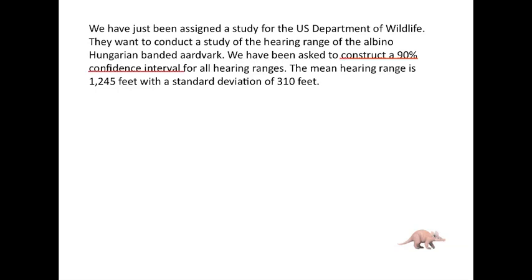Let's read through this and look for things that are important. 'Construct a 90% confidence interval' tells us this is a confidence interval problem. 'For all hearing ranges' tells us we're dealing with individual datum values within the distribution. The mean hearing range is 1,245 feet — we know Mu. And the standard deviation is 310 feet — we know sigma.